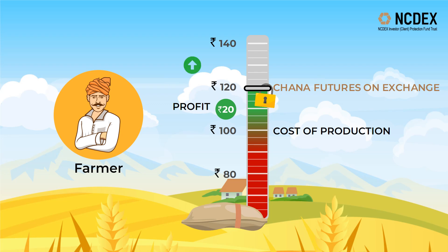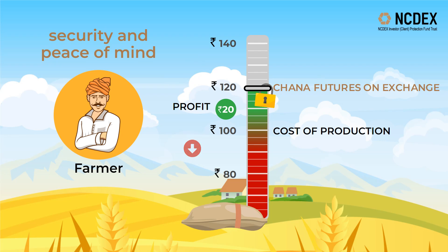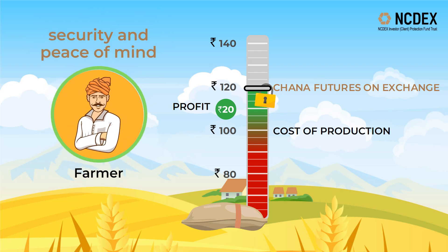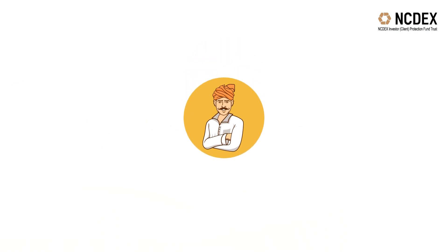But what if the market price of chana at the time of harvest goes up beyond 120 rupees? The farmer loses the chance to make more money; however, he prefers the security and peace of mind the contract provides, as his expertise is farming and not financial speculation. If the market price of chana at the time of harvest drops to 80 or 90 rupees, the farmer is protected because he had locked in at a price of 120 rupees per bag.